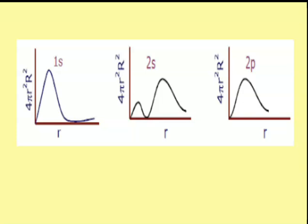For 1s, when we plot 4πr²R² along r, we observe that as the distance increases, radial probability distribution increases, becomes maximum, and then again starts decreasing. But remember, it will never become zero — meaning there is always some probability of finding the electron even at an infinite distance. The maxima corresponding to this graph appears at 53 picometers, or simply 0.529 angstrom, which is the radius of Bohr's first orbit.